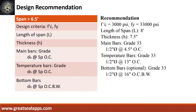Design recommendations: FC prime equals 3,000 PSI, FY equals 33,000 PSI, length of span is 8 feet, thickness is 7.5 inches. Main bars of grade 33, half inch diameter at 4.5 inches on center. Temperature bars of grade 33, half inch diameter at 13 inches on center. Bottom bars of grade 33, half inch diameter at 16 inches on center both ways.